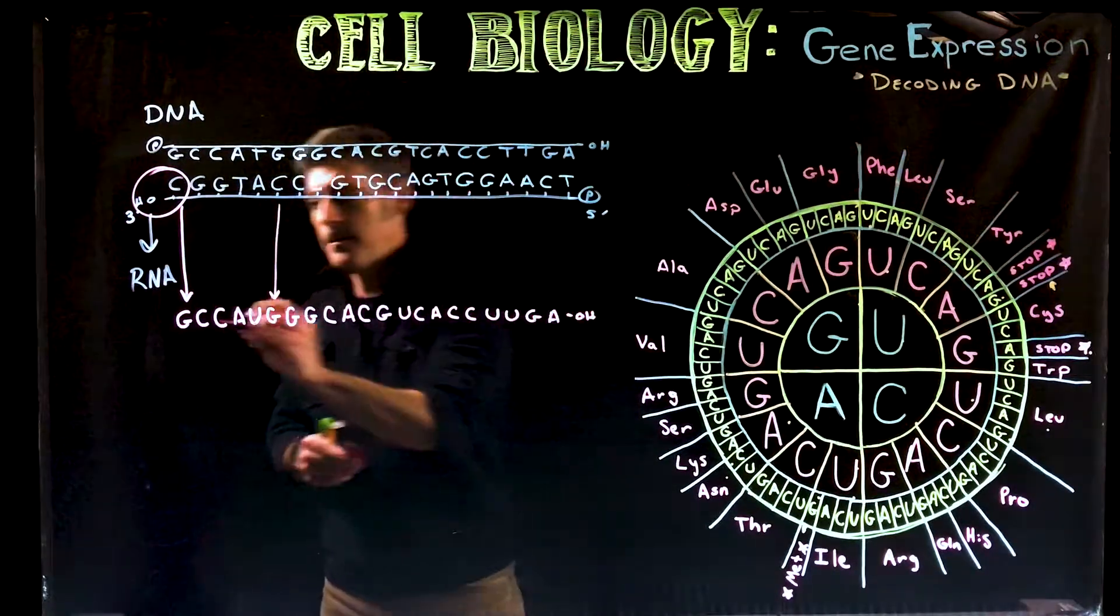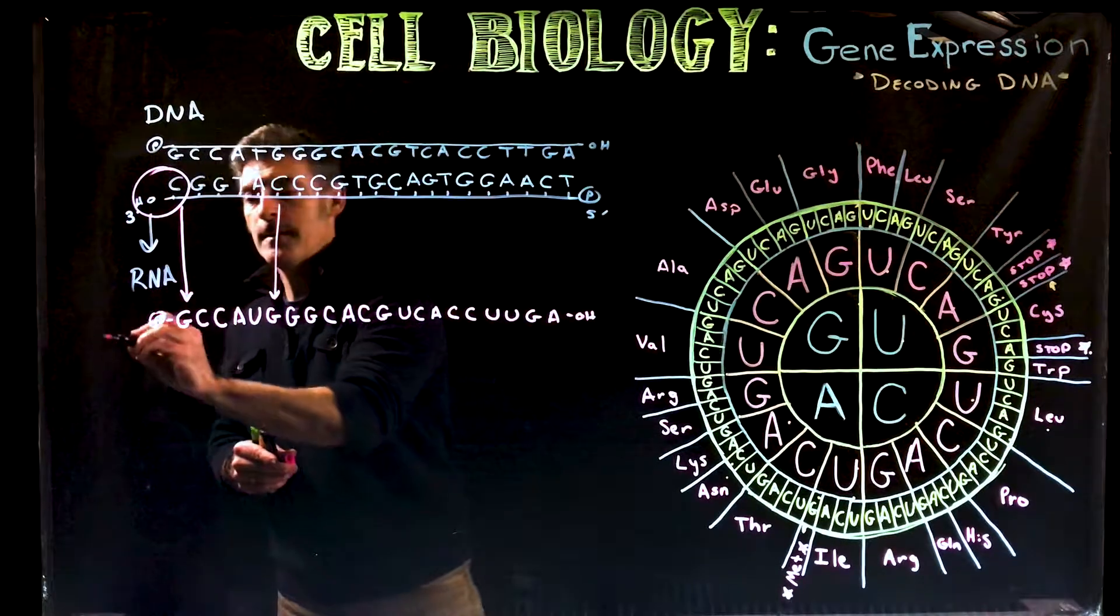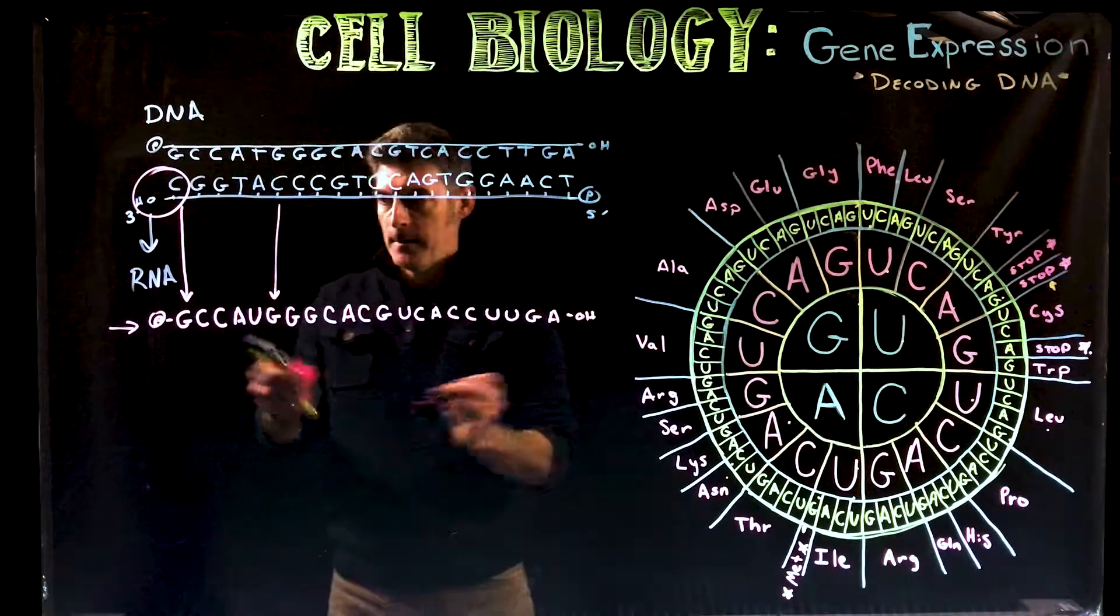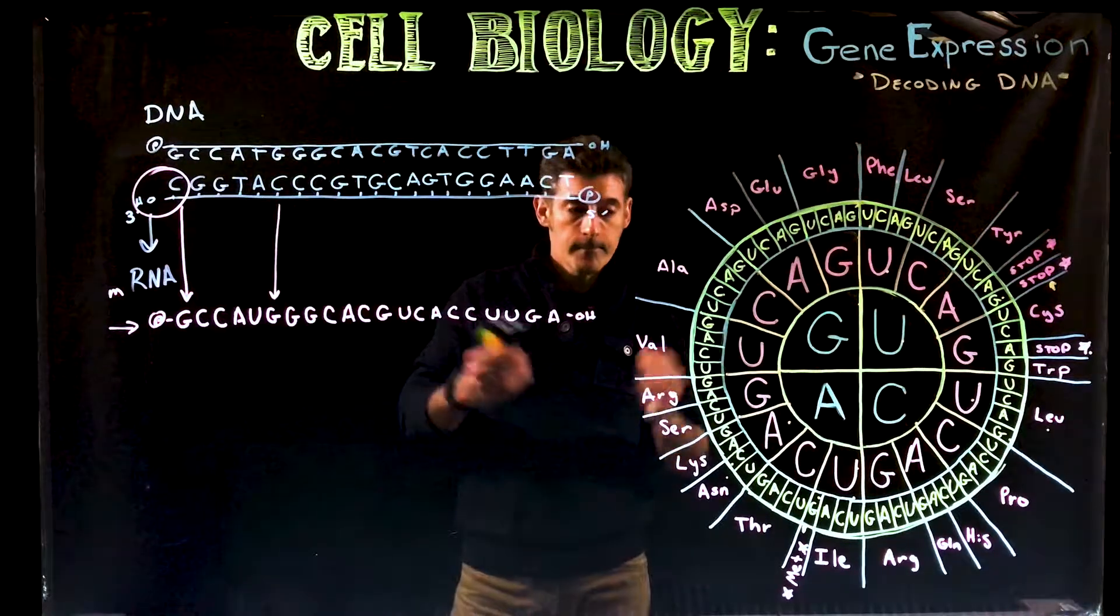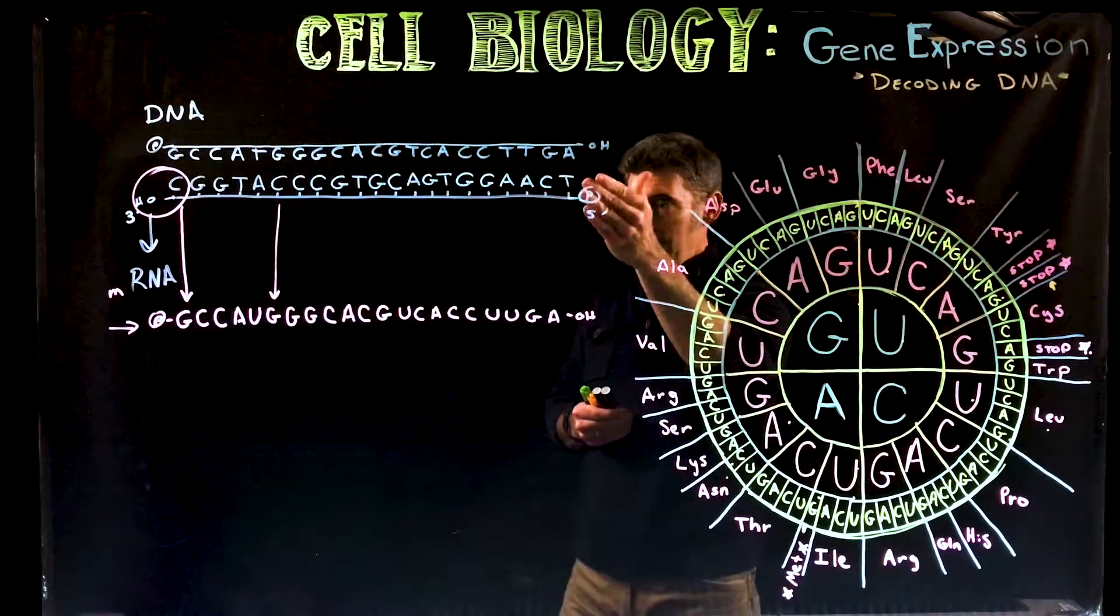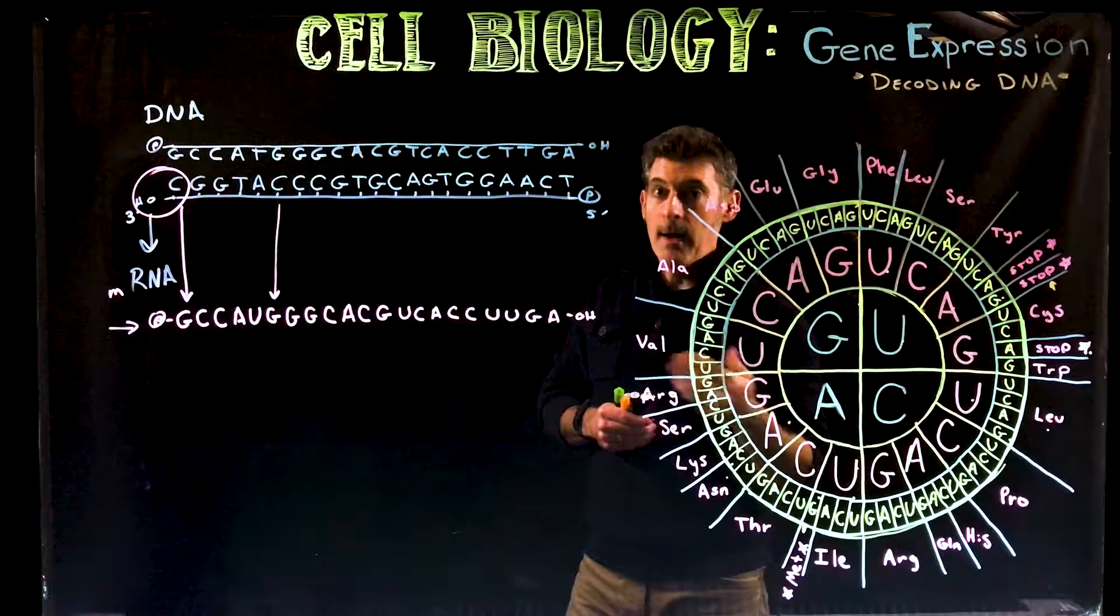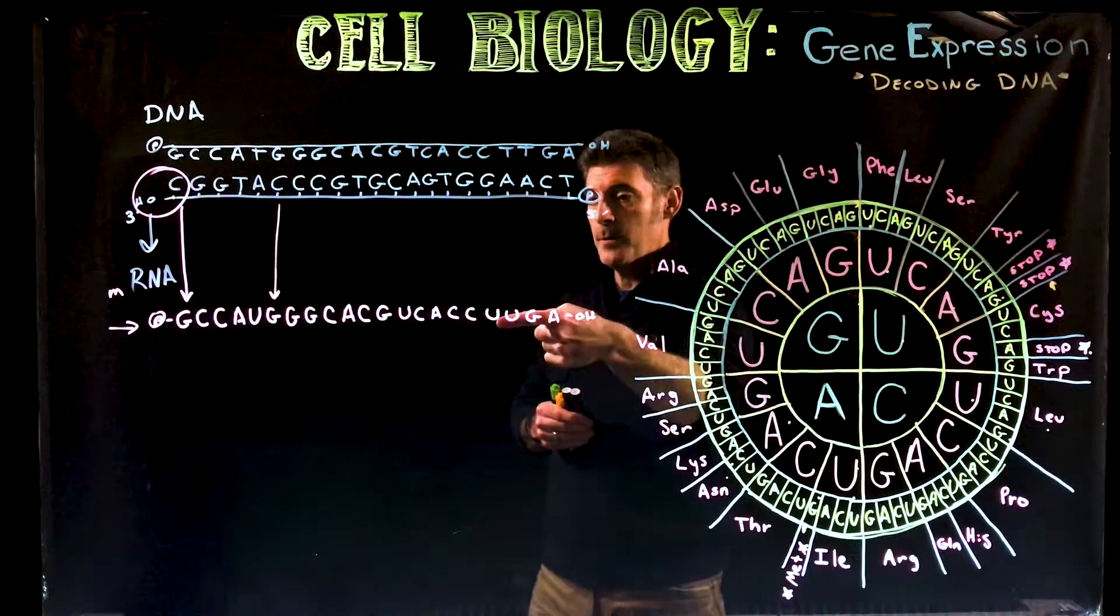This would be the RNA that would result. This would be complementary. This would be the five prime end. This would get a five prime cap, because we said this is going to be our messenger RNA. That's what you would do. I give you the DNA, you transcribe it into a piece of RNA.